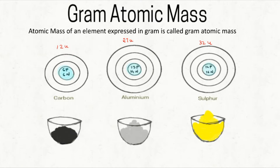Remember, whenever we are speaking about 12 units of carbon, we are speaking about the mass of only one atom of carbon. It's so tiny — you can't see that. Now I am going to take 12 grams of carbon. You can hold it in your hand, you can see it, because 12 grams of carbon contains so many atoms — 6.022 × 10²³ atoms of carbon.